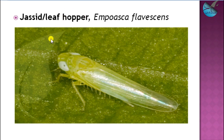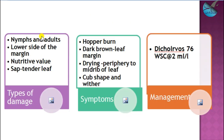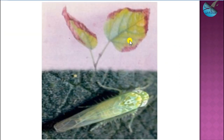The next important sucking pest is the jassid or leaf hopper, Empoasca flavescens. Due to the sucking nature of nymphs and adults, the nutritive value of leaves decreases. They mostly feed on tender leaves. Like in rice crops, a hopper burn symptom happens — we can observe drying in the periphery to the midrib of the leaf, ultimately forming a cup-shaped leaf which starts to wither sooner. When population is more, diclofos spray can be used.